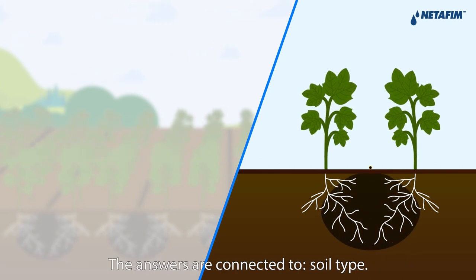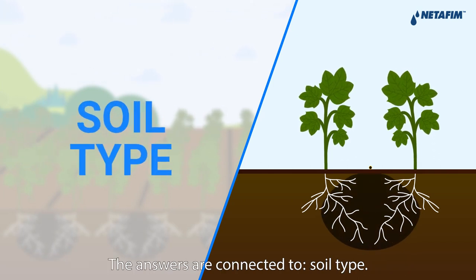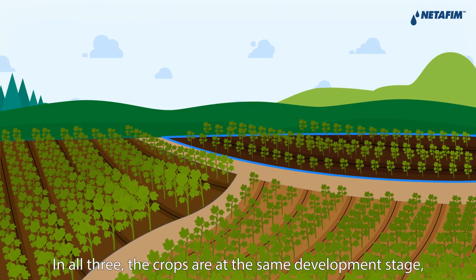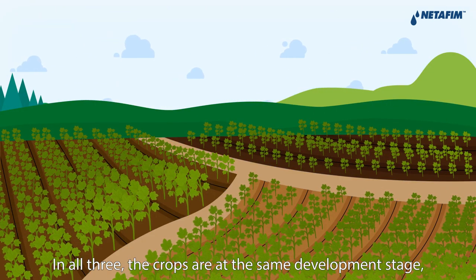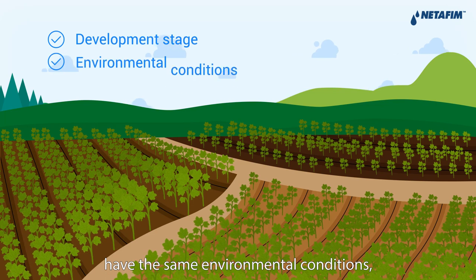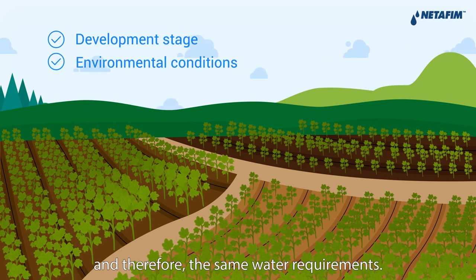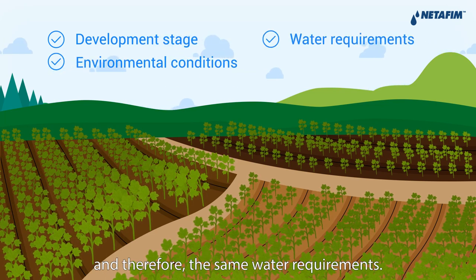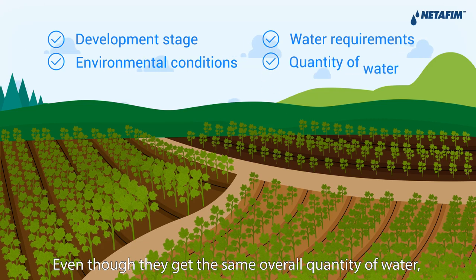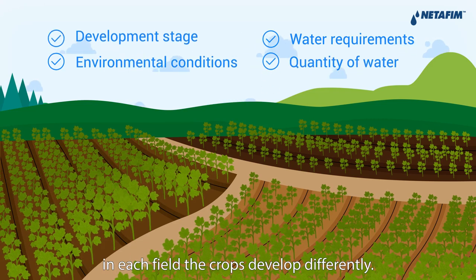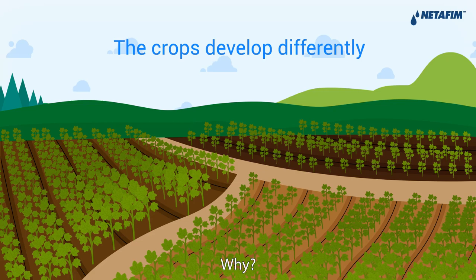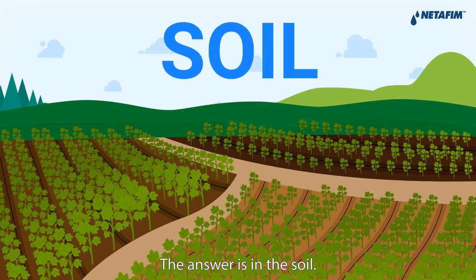The answers are connected to soil type. Take a look at these three cotton fields. In all three, the crops are at the same development stage, have the same environmental conditions and therefore the same water requirements. Even though they get the same overall quantity of water, in each field the crops develop differently. Why? The answer is in the soil.